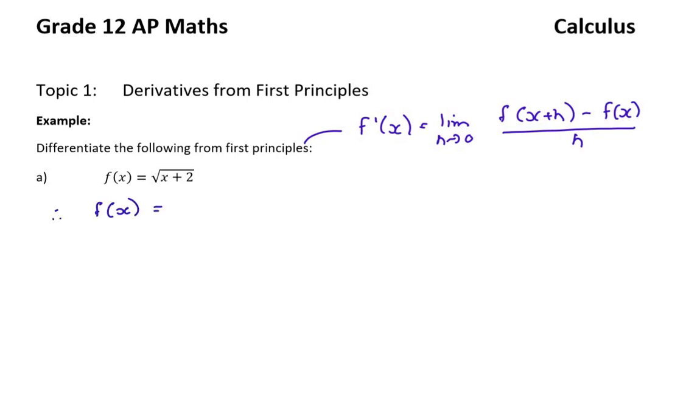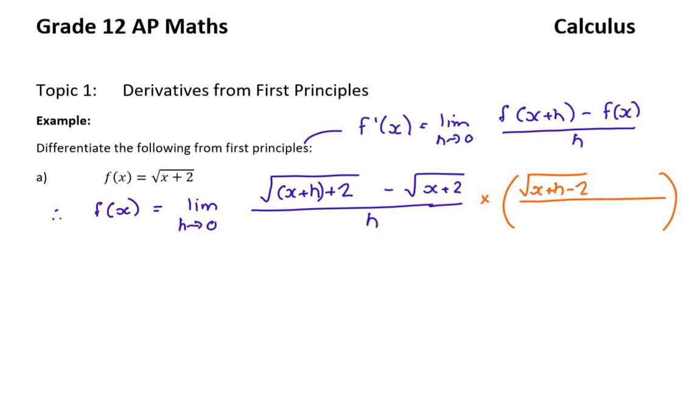First thing is derivatives from first principles. From first principles means the whole f dash x equals the limit as h tends to 0 of f of x plus h minus f of x over h given to you on your formula sheet. And so you don't have to remember that. Here, this is the square root. It would never be asked in normal maths.